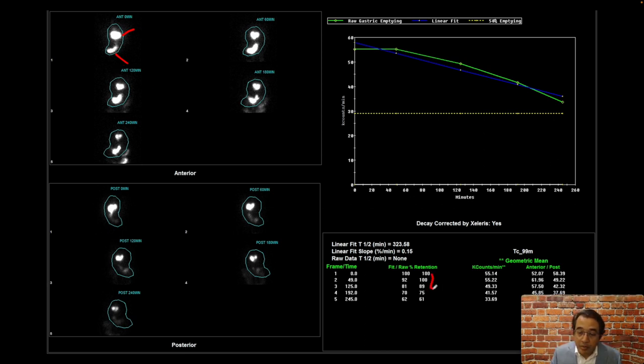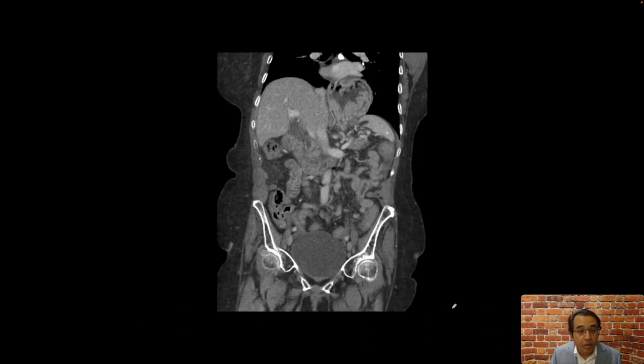In terms of the numbers, they have severely delayed gastric emptying or gastroparesis. When we look at their CT, we find that the fundus of the stomach is in the chest. They have this large hiatal hernia containing most of the proximal part of the stomach. Thank you for watching.